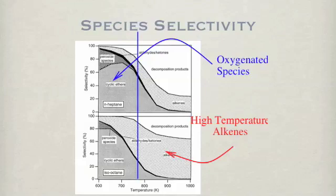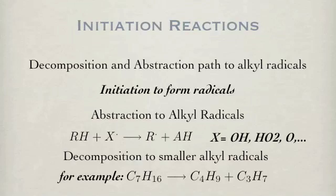This shows that the species resulting from the addition of oxygen are very important for low temperature chemistry. At high temperatures, the radical decomposition species are predominant, such as alkenes. High temperature chemistry is the chemistry of bond breaking.